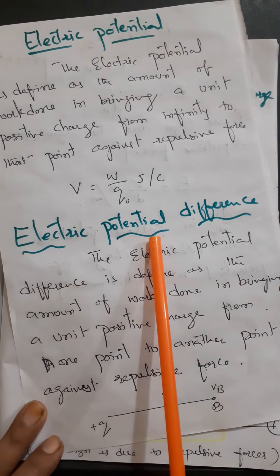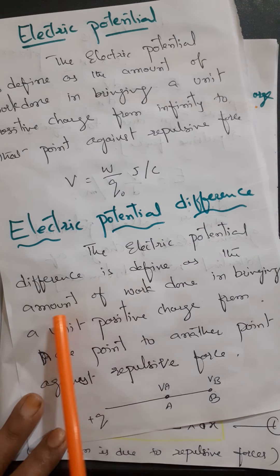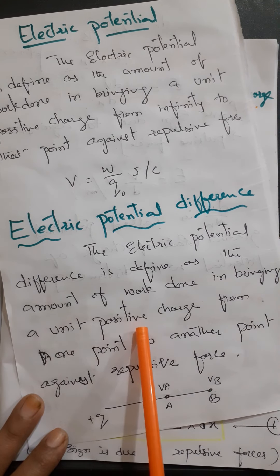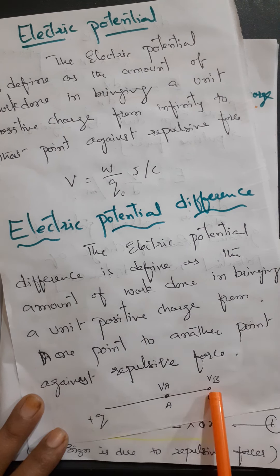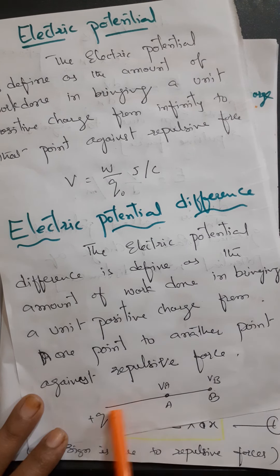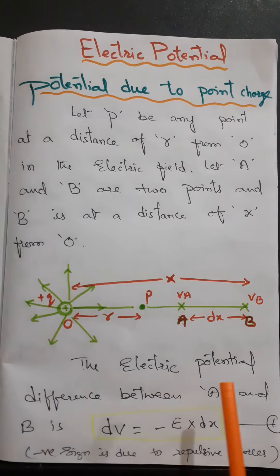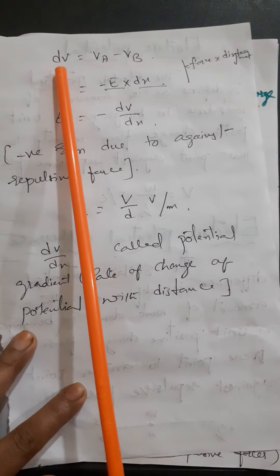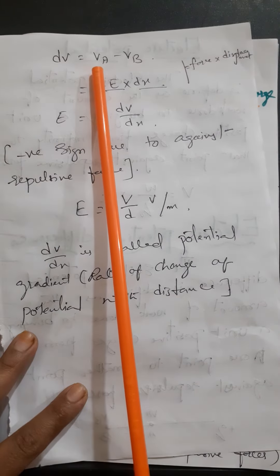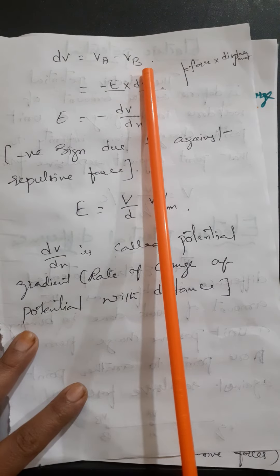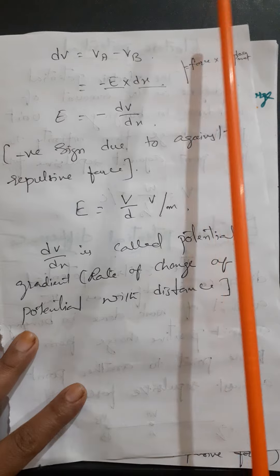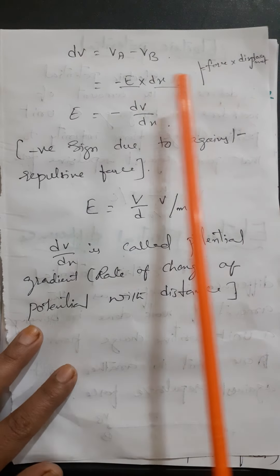What about electric potential difference? It is simply the amount of work done in bringing a unit positive charge from one point to another point against the repulsive forces. The small potential difference can be given as VA minus VB. So it is the amount of work done in bringing a unit positive charge from one point to another point.